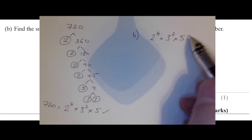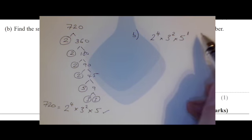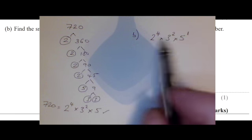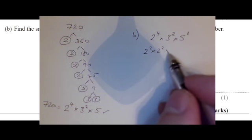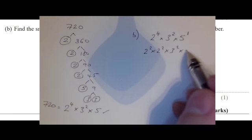I'm going to break that 2 to the power of 4 up into 2 squared times by 2 squared, 3 squared and only 5.